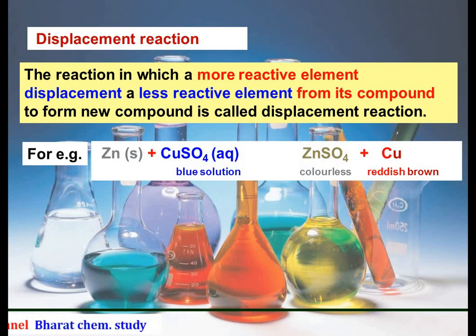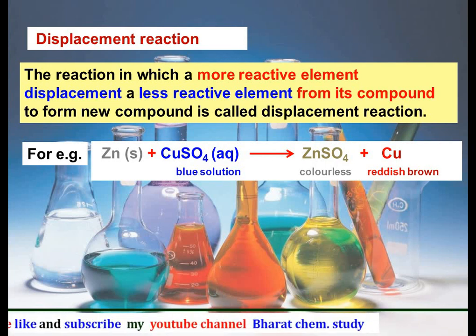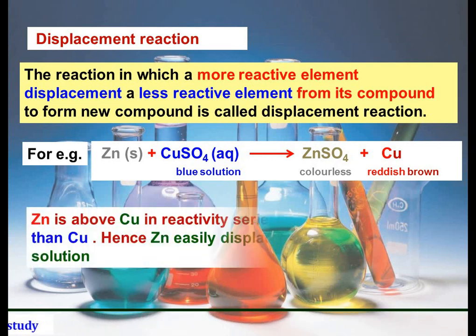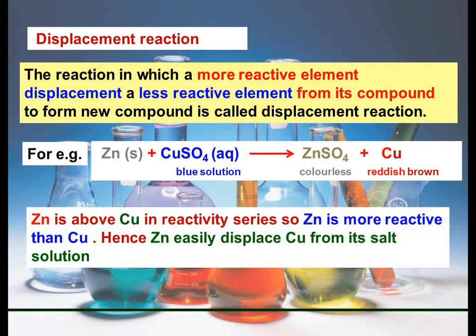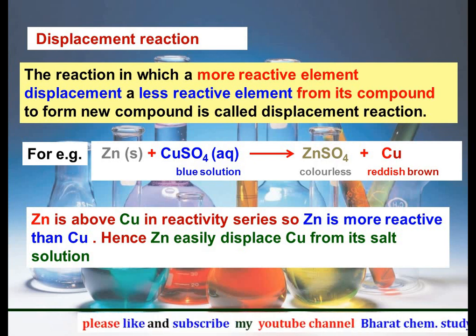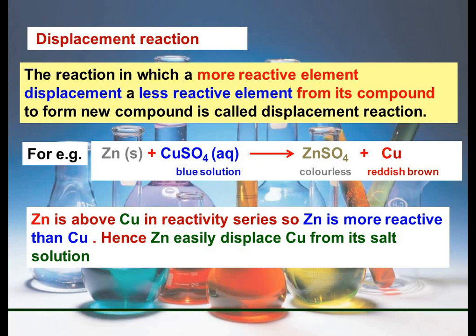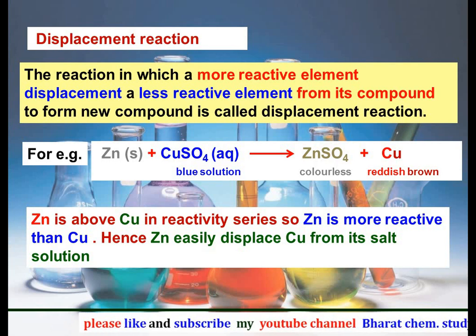For example, when zinc is added to copper sulfate solution, which is blue in color, zinc sulfate is formed and reddish-brown copper is deposited. In this reaction, zinc is above copper in the reactivity series, so zinc is more reactive than copper.